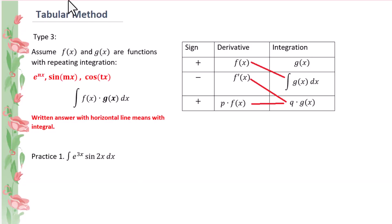This video is about tabular method type 3. Assume f and g are the functions with repeating integration, like these three functions. Then the integral of f times g dx, we will use this tabular method. This is also the priority to be in the integration column. Remember, a written answer with a horizontal line means with the integral.